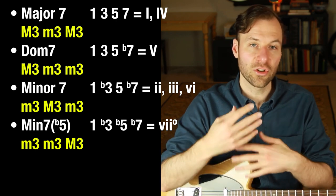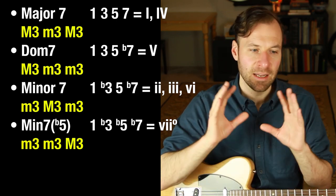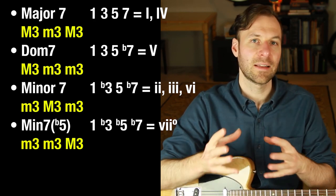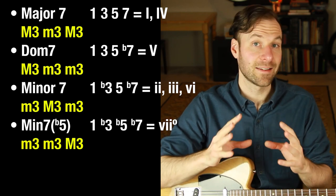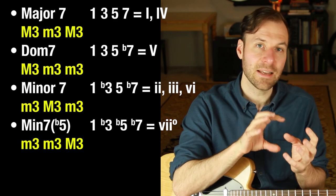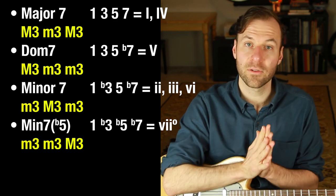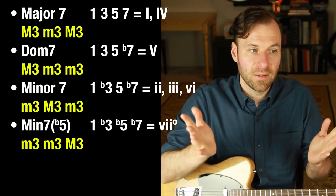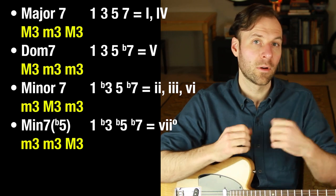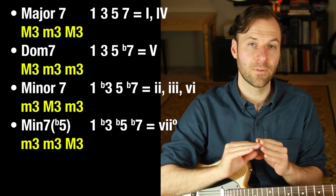In every major key, the chords come out like this: the one chord is major seven, the two chord is minor seven, the three chord is minor seven, the four chord is major seven, the five chord is dominant seven — and it's the only place in the key where dominant seven exists. The six chord is minor seven, and the seventh chord is half diminished, which is the only place that exists in the key as well. So a dominant seven chord is a giveaway that you may be looking at the five chord of a major key. A half diminished chord points to the seventh chord of a major scale. Major seven exists in two places and minor seven in three, so those are less definitive by themselves.